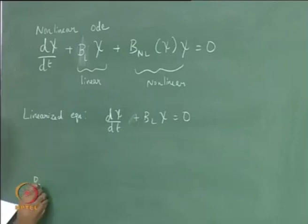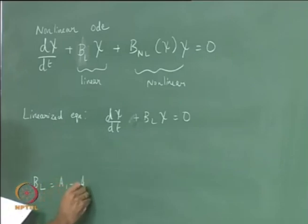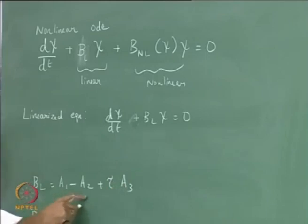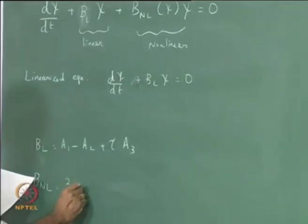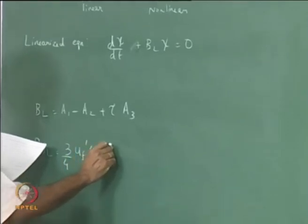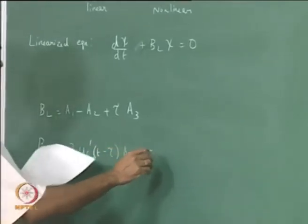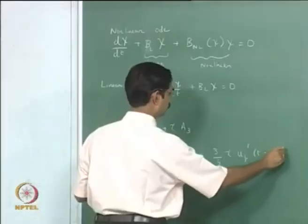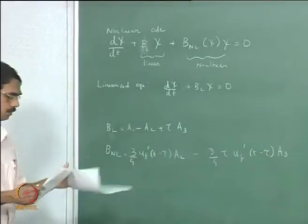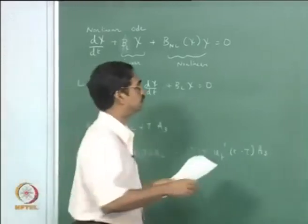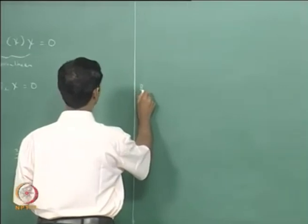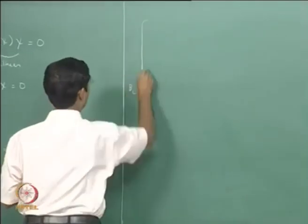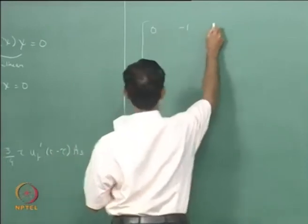BL. We derived expressions for A1, A2, A3 last time if you remember. Just for the sake of completion I will write this matrix. So BL equals 0, minus 1, 0...